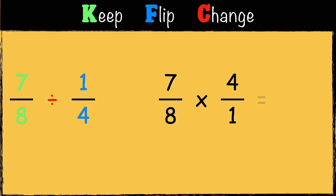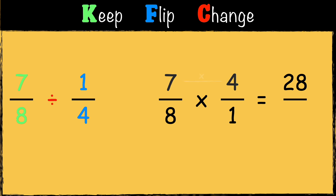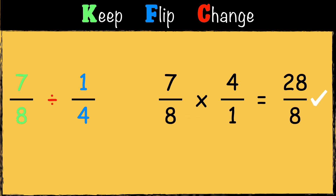Now we just multiply the fractions: seven multiplied by four is twenty-eight, and eight multiplied by one is eight. So the answer is twenty-eight eighths.